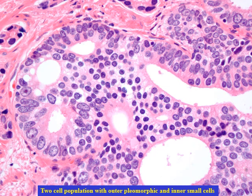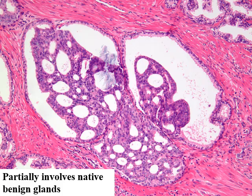A two-cell population in which outer cells are pleomorphic and inner cells are monomorphic is also a very helpful feature. Partial involvement of the gland is also a common feature with intraductal carcinoma. But again, remember that you do need one of those four major features discussed earlier.